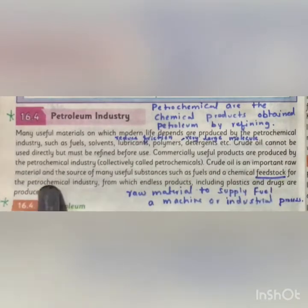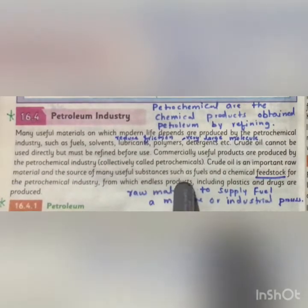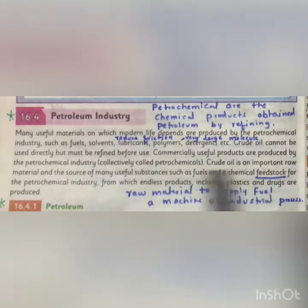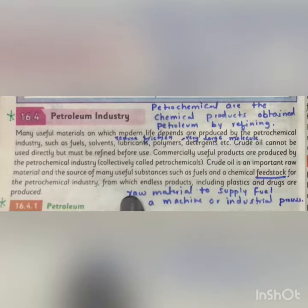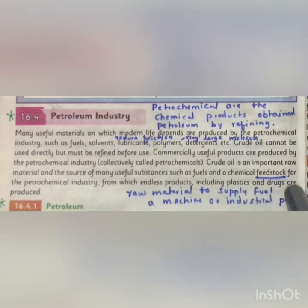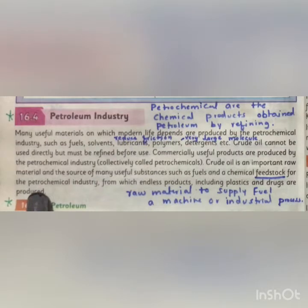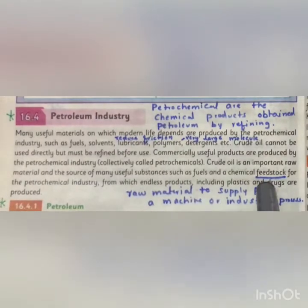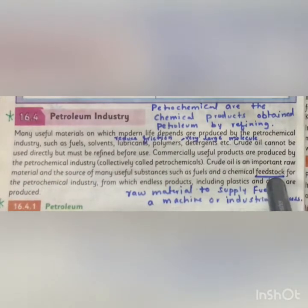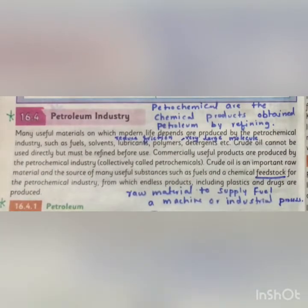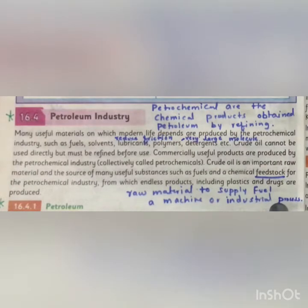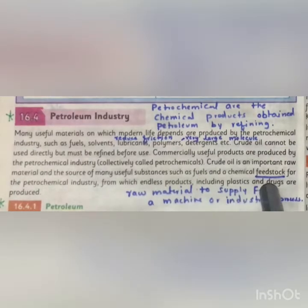Crude oil is an important raw material and the source of many useful substances, such as fuel and chemical feedstock for the petrochemical industry, from which endless products including plastics and drugs are produced. Chemical feedstock is raw material used to supply fuel to a machine or industrial process.